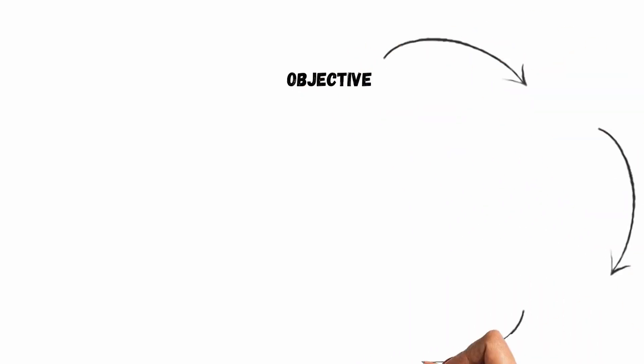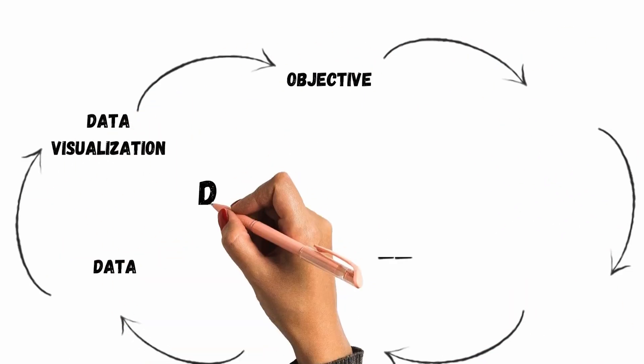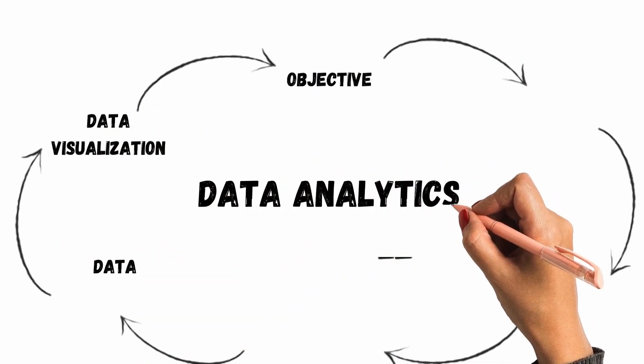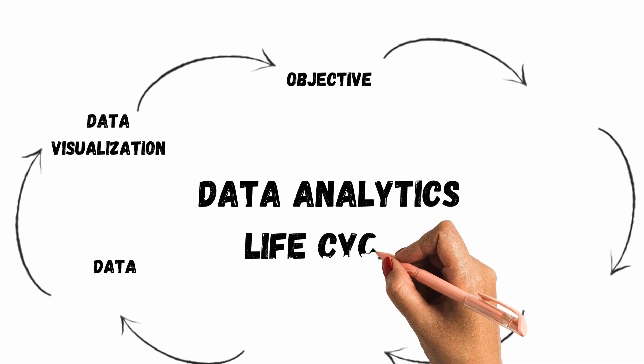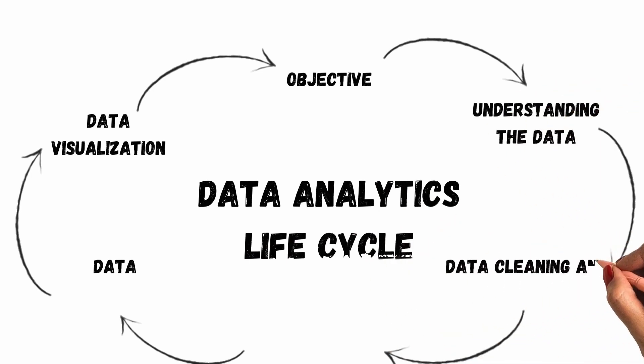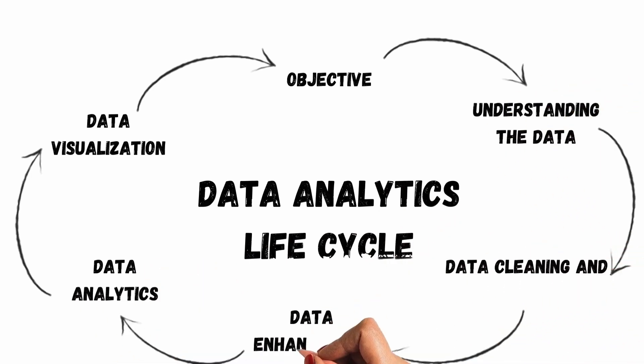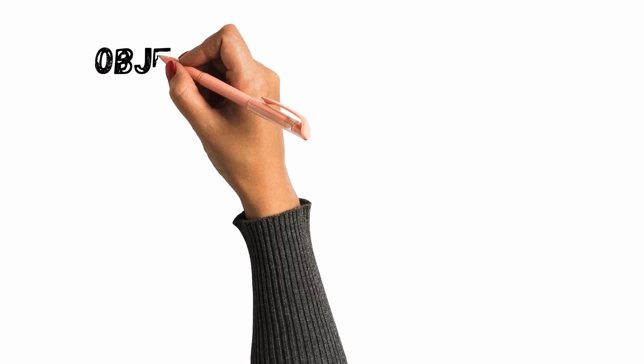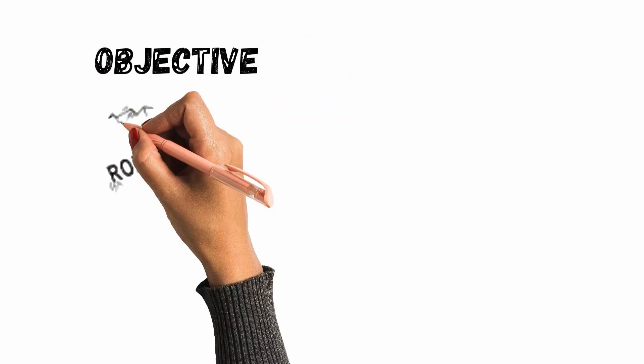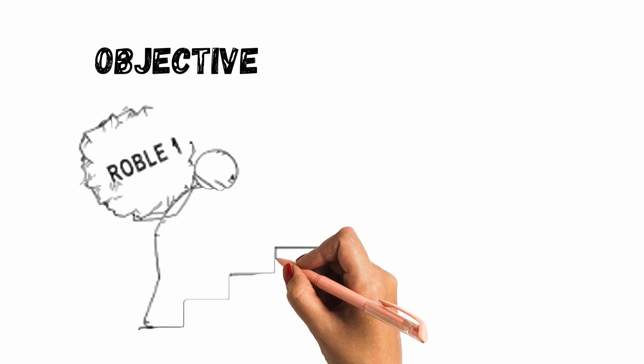The next section is on the data analytics life cycle. Data analytics is a continuous process, thus giving it a life cycle diagram. There are six major elements involved: objectives, understanding the data, data cleaning and transformation, data enhancement, data analytics, and data visualization.